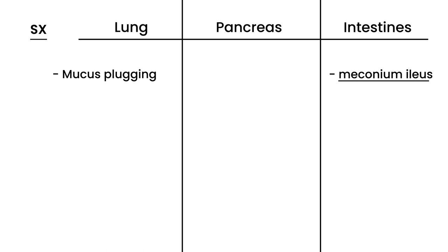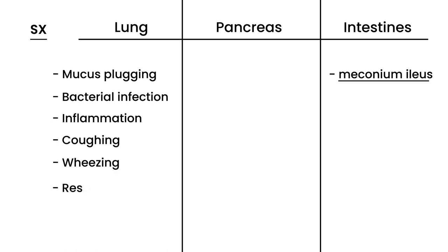That mucus plugging is not without its problems. It causes bacterial infection, and it can cause inflammation as well. And that is a chronic disorder, chronic symptomatology that cystic fibrosis patients have to live with. Other symptoms that can happen related to the lung include coughing, wheezing, and respiratory tract infections. Those are the symptoms associated with the lung.